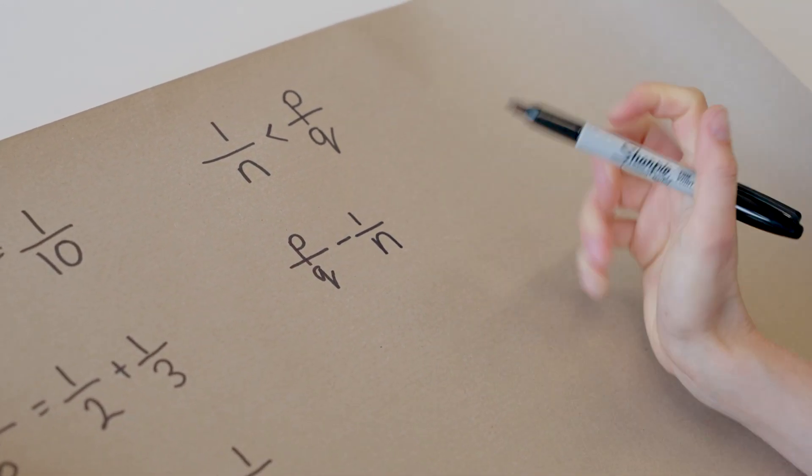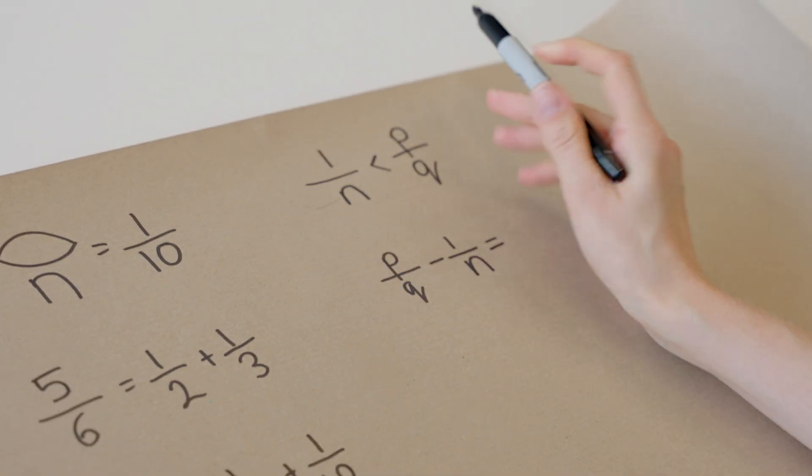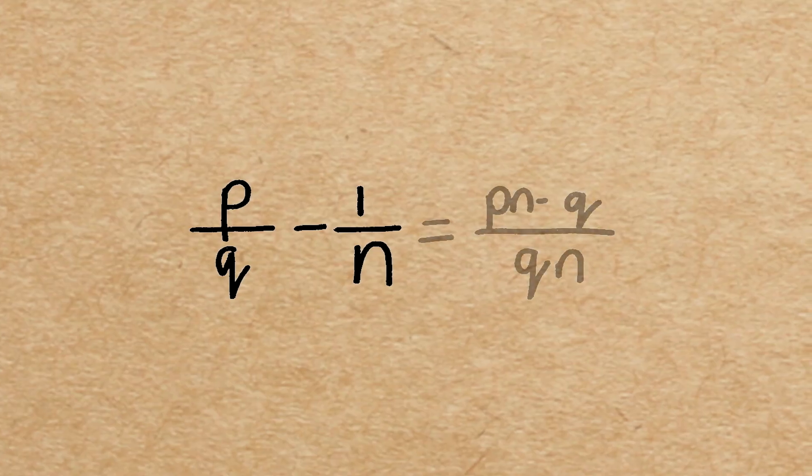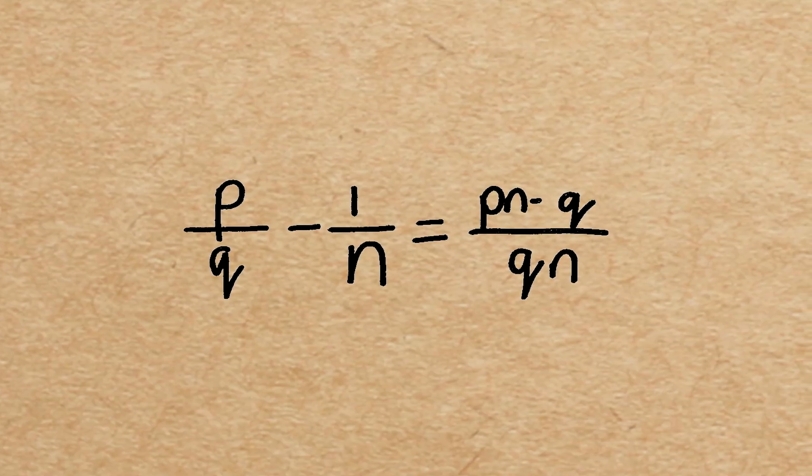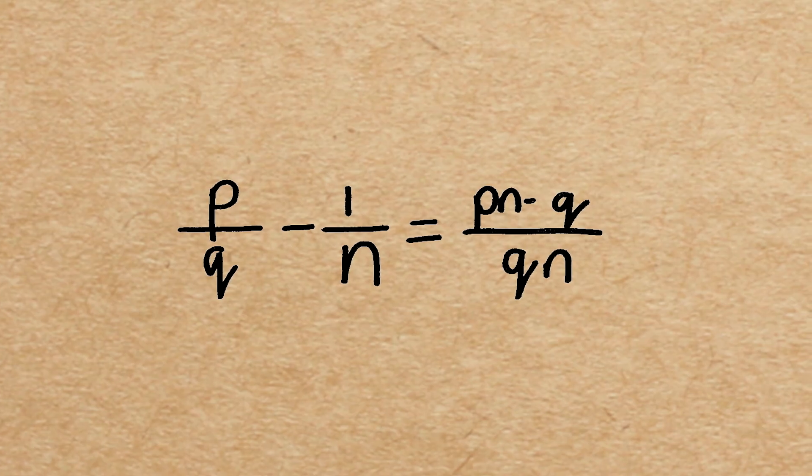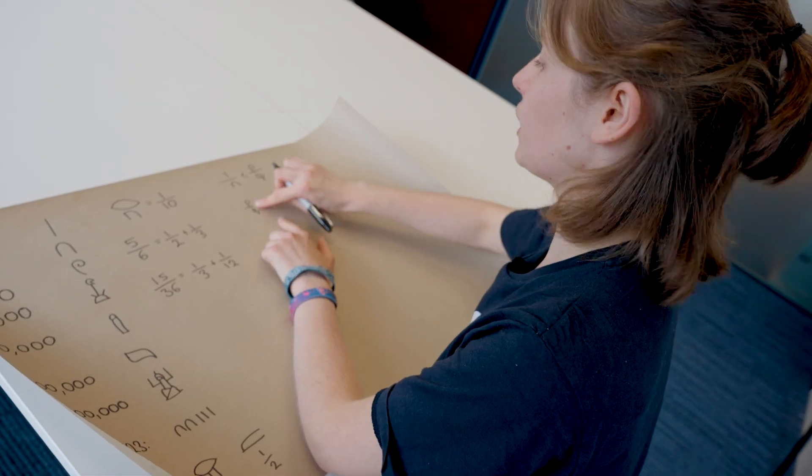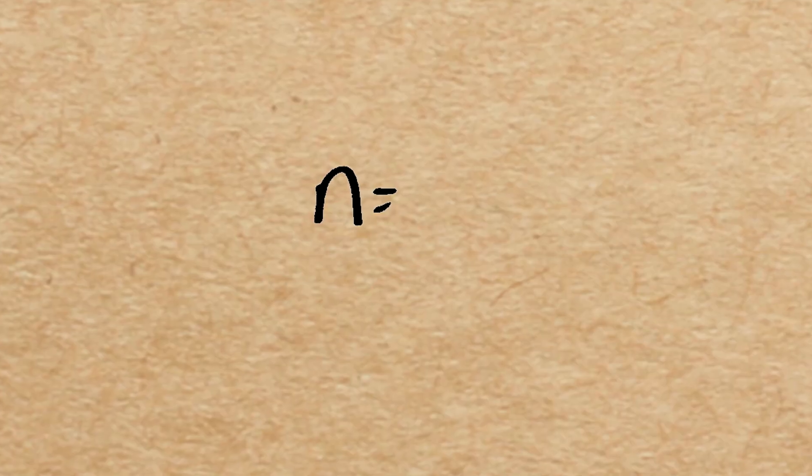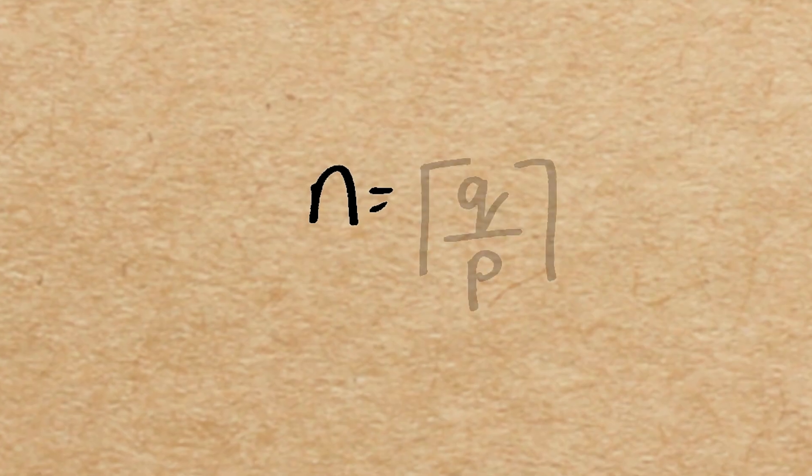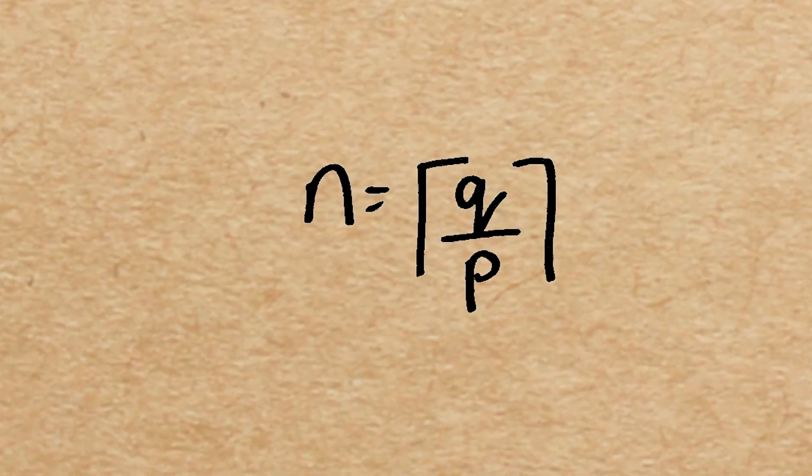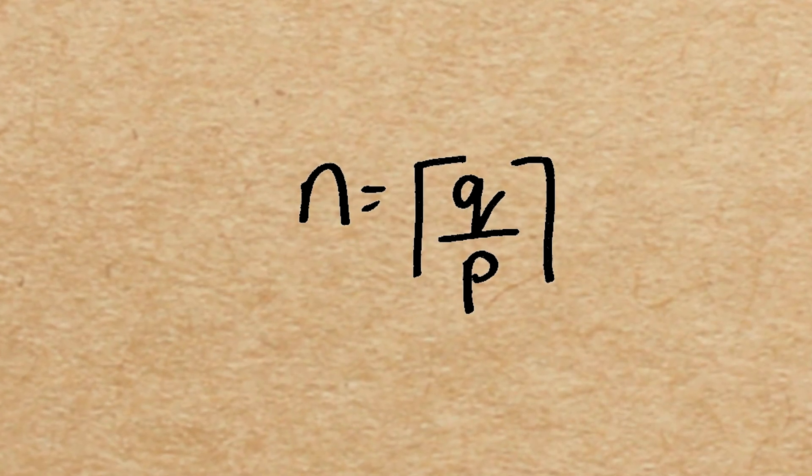What do we know about this? This is going to be positive, because we know this is less than this. So, we'll end up with p n minus q over q n, which is positive. We can actually write an expression for n as well. We could write n as the ceiling function of q over p, so it means it's the smallest integer above this fraction.